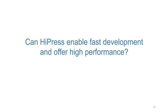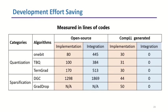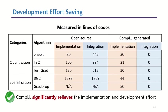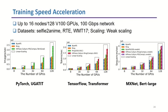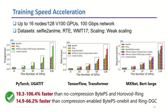We intensively evaluate HAPRES to answer the question: can HAPRES enable fast development and offer high performance? We take lines of code for both implementation and integration of gradient compression algorithms to measure the development efforts. Take the 1-bit algorithm as an example: the open-source version requires 18 and 445 lines to implement the logic and system integration respectively, but our system only uses 13 lines total. Our performance evaluation shows that the auto-generated code can outperform the open-source version by up to 35 times. Our system can significantly relieve implementation and development efforts. We then measure end-to-end training throughput, training three different popular DNN models atop three different DNN systems, and find that HAPRES improves training speed over both current no-compression and compression-enabled baseline systems.